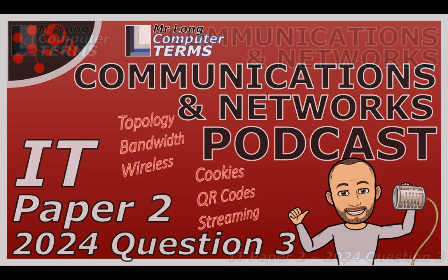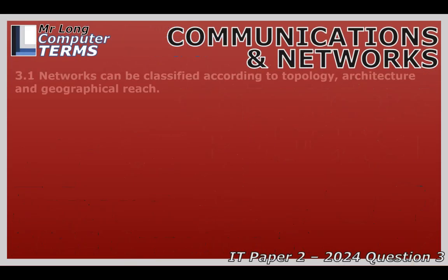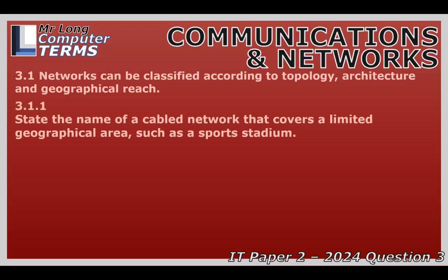Let's kick things off with the basic idea of a network. At its heart, it's just devices connected, but these connections can cover tiny areas or huge ones — like home Wi-Fi versus a whole university. A classic example of a network using cables that covers a specific limited area, like a sports stadium or a school building, is a LAN — a local area network. These are typically cabled networks, built for speed and efficiency within that specific space, letting all connected devices communicate really quickly.